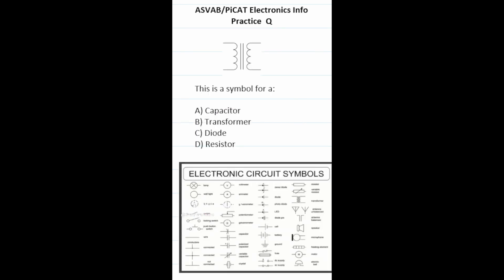Practice test question: this is a symbol for? If you look right here, you can see that this is a symbol for a transformer. If you're going to take this test, quickly look at the common electronic circuit symbols — if you get a question like this, you'll know exactly what the answer is. You can find this by googling common electronic circuit symbols.